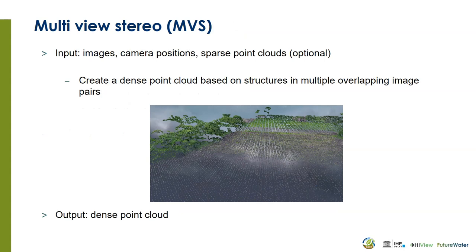The next step is to create the multi-view stereo. It uses the images and the camera positions from the previous step, and optionally sparse point clouds. It will create a dense point cloud based on the structures that it recognizes in multiple overlapping image pairs.